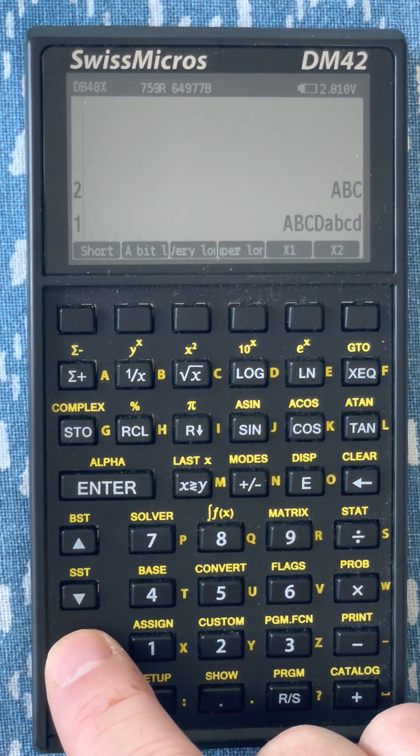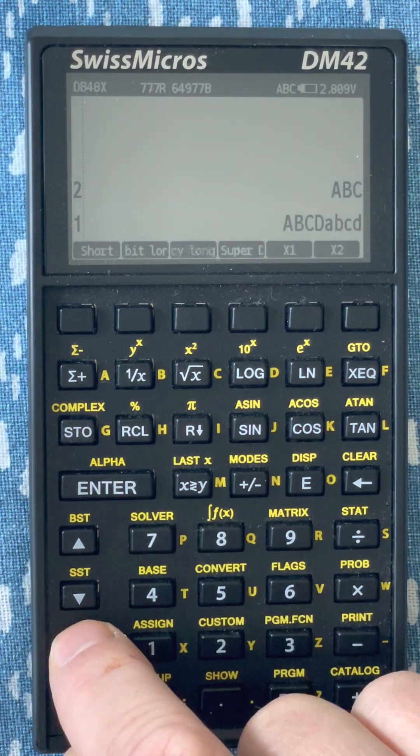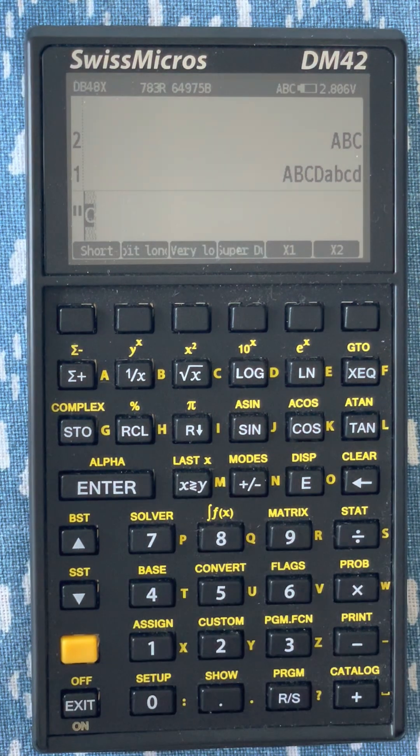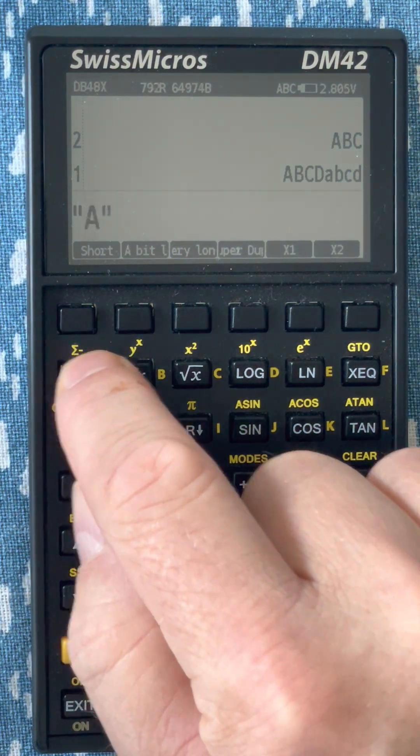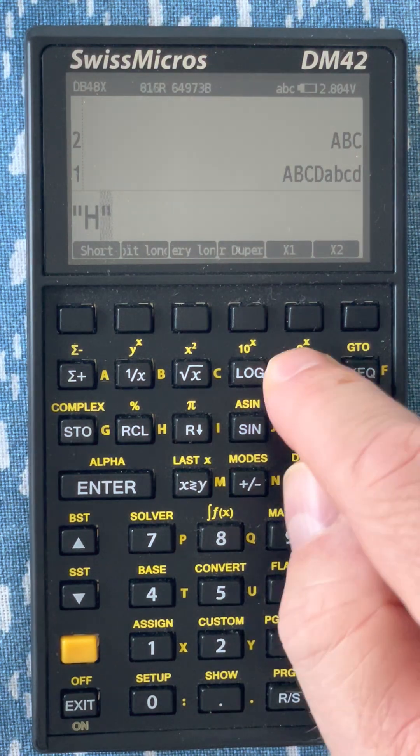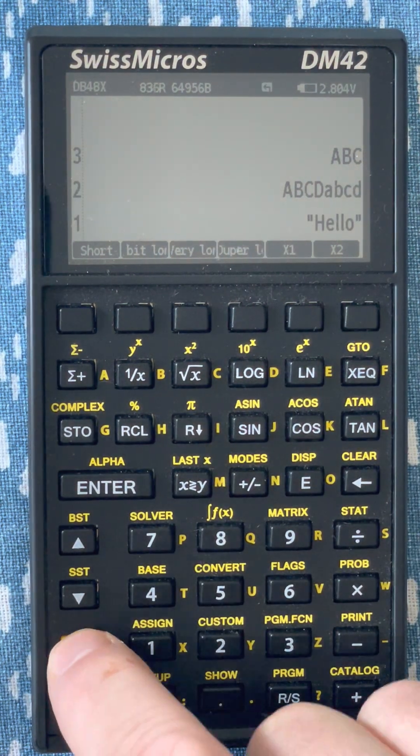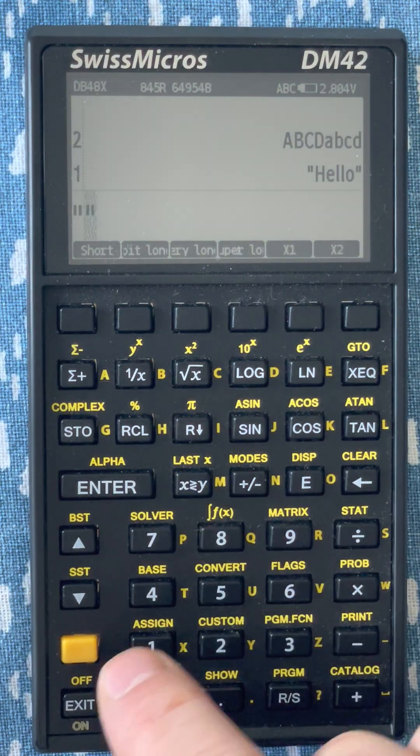I can type text. So shift alpha, and let me type the usual characters. Hello. Let me put another string.